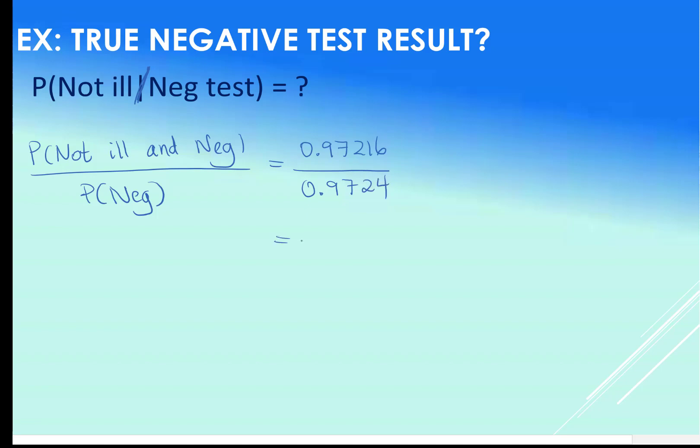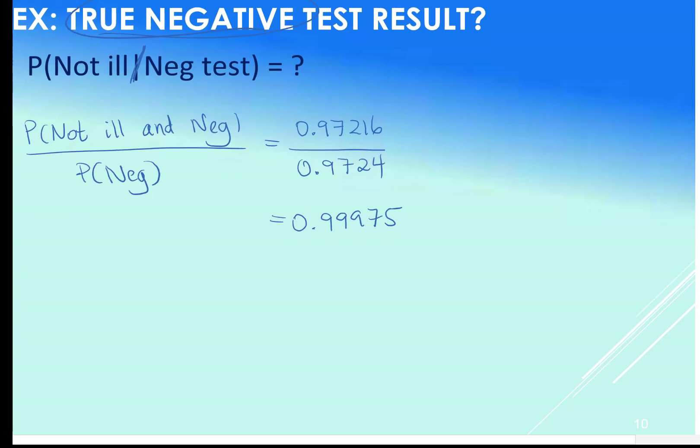Just divide them by each other. And we get 0.99975. This is actually what's called our true negative. So we're quite accurate. If there's a negative test result given out, it's fairly accurate.